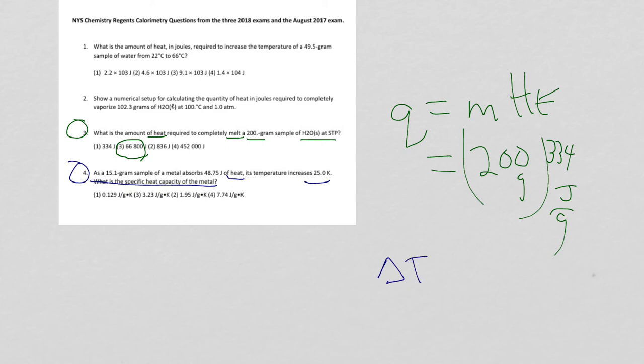So it turns out that delta T, the change in temperature, that for every one degree Celsius change in temperature that's equal to one Kelvin. So since this is increasing 25 K, that would be increasing 25 degrees Celsius. So we're good.